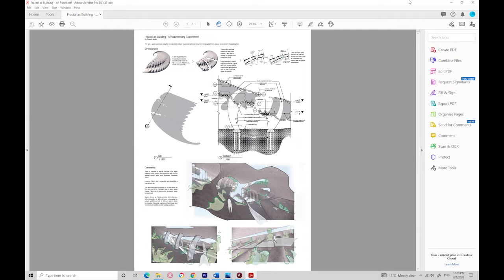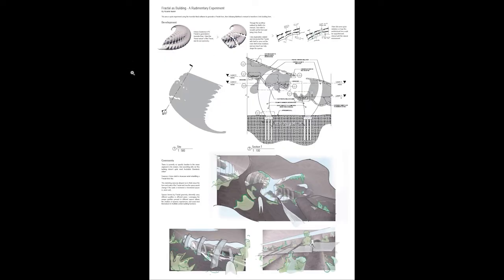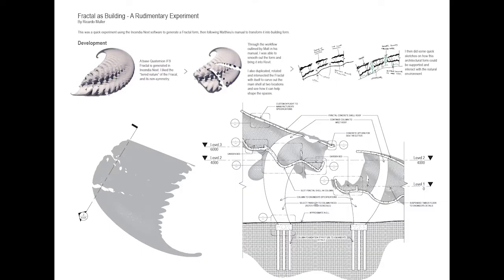Here is the panel from my workshop. We'll quickly go through it from top to bottom, how we went from Incendia Next all the way to starting to develop these spaces through process sketches. On the top left, this is the shape that was outputted and generated from the Incendia Next software. It's called a quaternion IFS fractal.